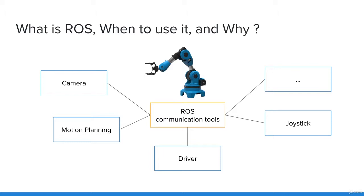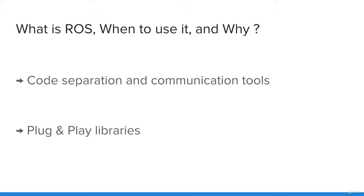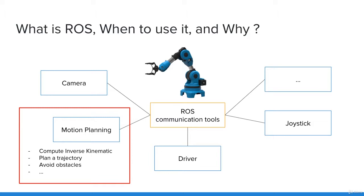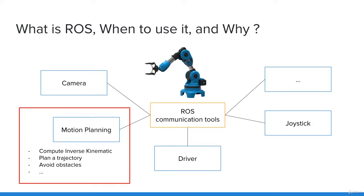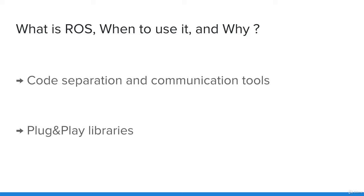Each of those independent blocks will communicate with each other in a way that is powerful and scalable. The second main point is that ROS provides you with many plug-and-play libraries that will save you a huge amount of time and prevent you from reinventing the wheel. Coming back to the robotic arm example — imagine how difficult it can be to compute the inverse kinematics, to plan a trajectory that makes the arm move smoothly and avoid any obstacle. You might think it's impossible unless you spend two years studying mathematics and motion planning. But with ROS, you need maybe two days to install a library and figure out how to use it.